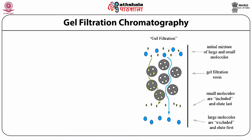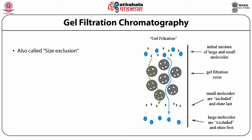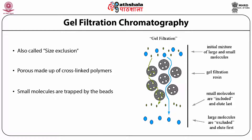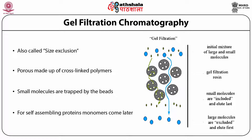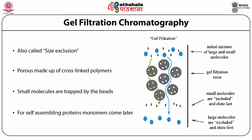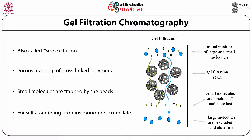Gel filtration chromatography, also called size exclusion chromatography, separates molecules based on size. The porous material is made up of cross-linked polymers. Small molecules are trapped by the beads while self-assembling protein monomers come later. The smaller the molecule, the more strongly it binds, whereas bulky molecules bind lightly. The bulky molecule comes out first, followed by the smaller molecule.